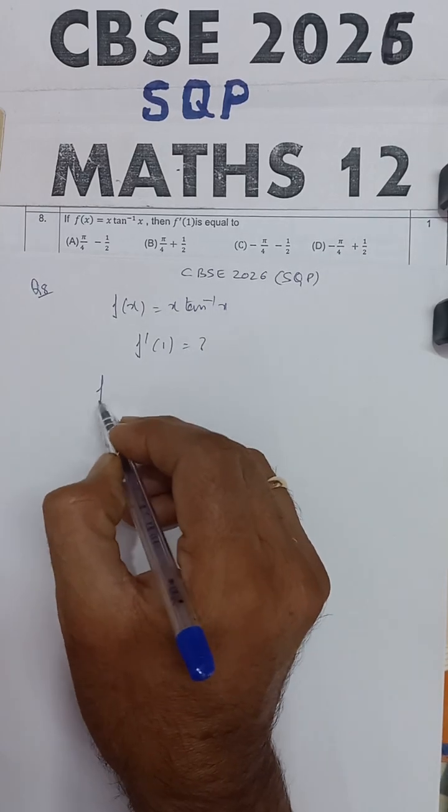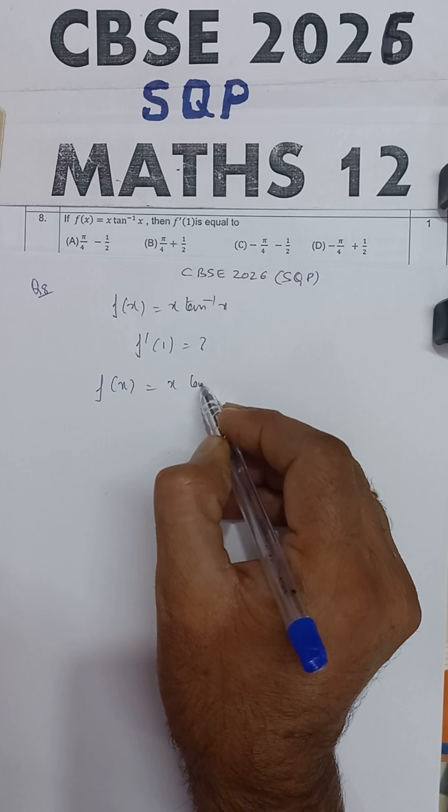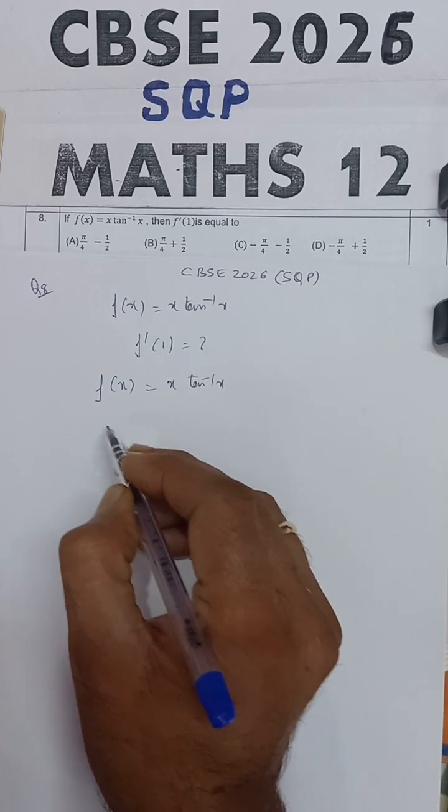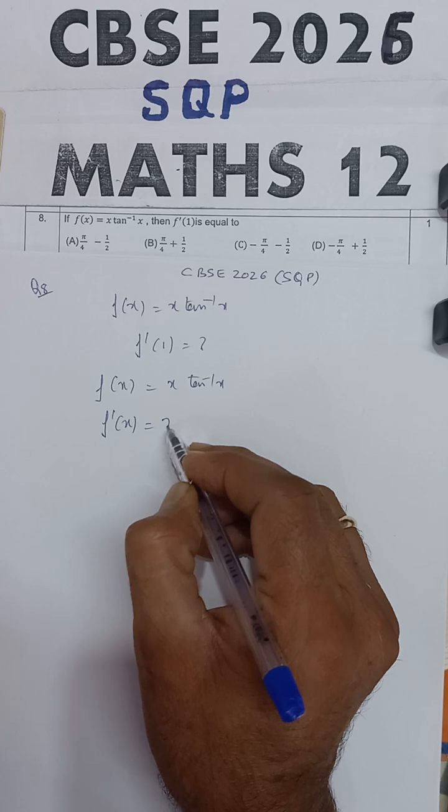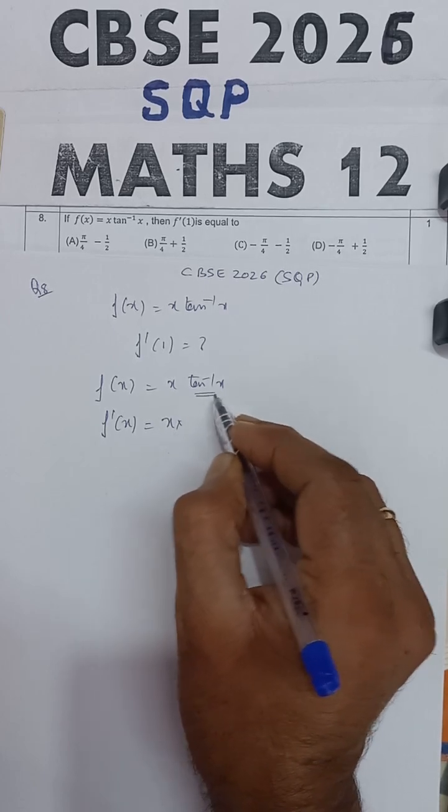So this function is given: f(x) equals x tan inverse x. Differentiating this with respect to x on both sides, f dash x will be equal to first function times differentiation of second.